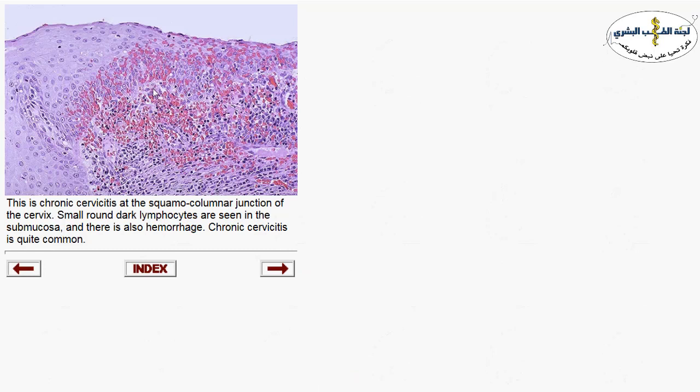One of the conditions affecting the cervix is chronic cervicitis. Chronic cervicitis is a common finding characterized by chronic inflammatory cell infiltrate, mainly plasma cells. Main causes include atrophic endometrium and reactive changes.